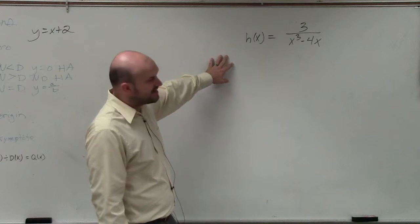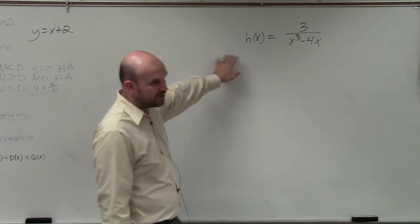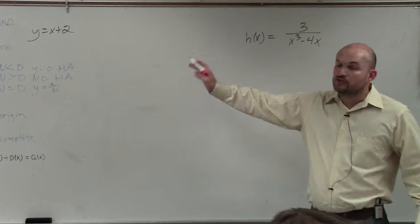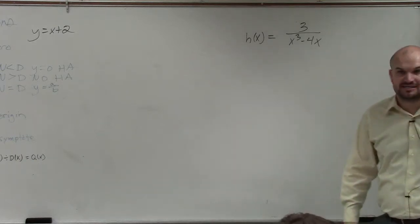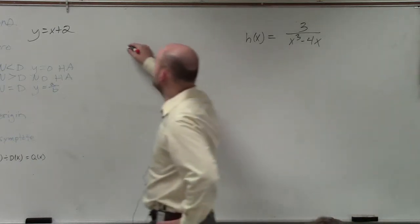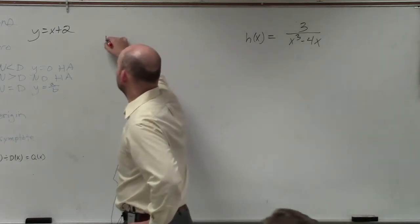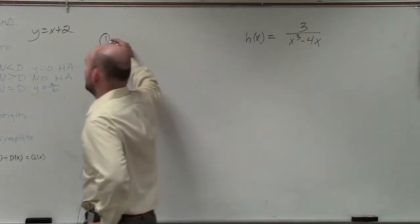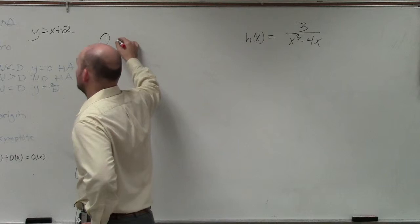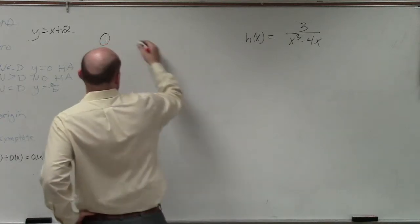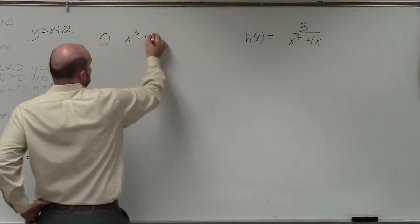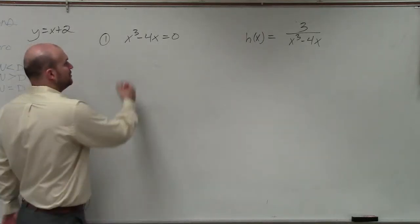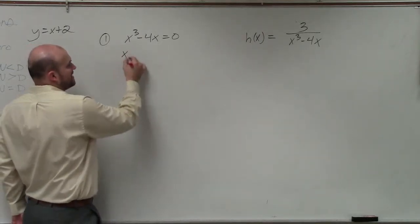So you guys have h(x) equals 3 divided by x cubed minus 4x. You can see I have some steps here. The first thing is to identify your vertical asymptotes. All we need to do is set our denominator equal to 0 and solve. So my denominator is x cubed minus 4x equals 0. I can factor out an x.